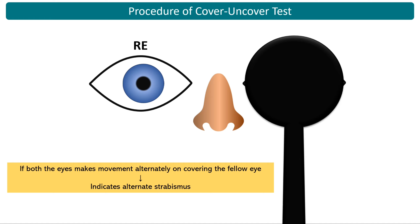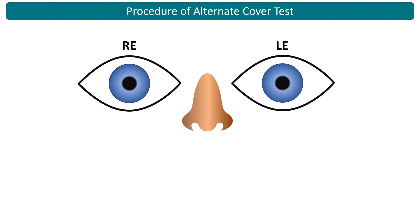Repeat the entire cover-uncover test at near distance, then move on to the alternate cover test. In the alternate cover test, place the occluder before any eye for 2 to 3 seconds and transfer it quickly to the other eye. Keep the occluder for 2 to 3 seconds and shift again, repeating this cycle. Make sure the patient does not see the target binocularly at any moment.